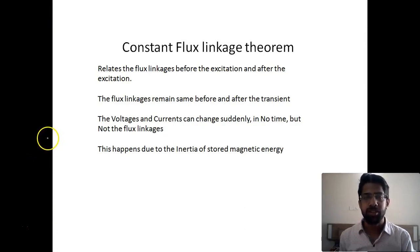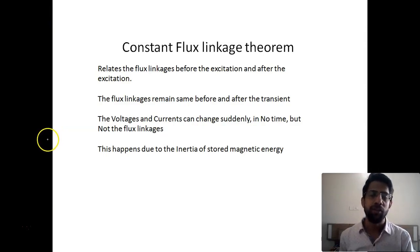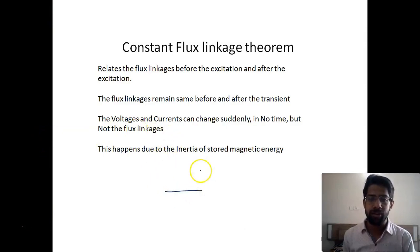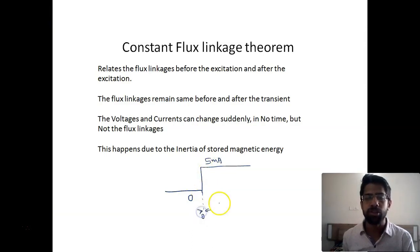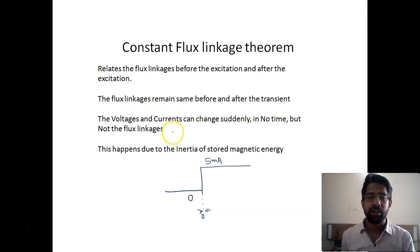Now, voltages and currents can change suddenly in no time. For example, if you close a switch, the amount of current or voltage developed across a particular load changes suddenly. If the initial current was zero, just after you close the switch current starts moving — say the final current is 5 mA. This change occurs in almost zero time.